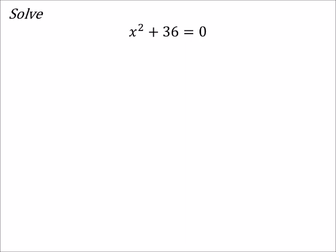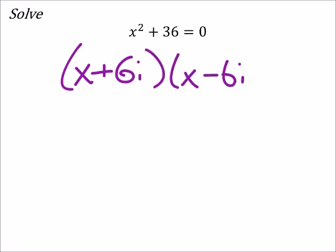Well, some of us may look at this one and want to break this up as the sum of two perfect squares. The problem with that is that now you've got x plus 6i and x minus 6i. So that's not really what we're looking for in this because it gives us an imaginary number.